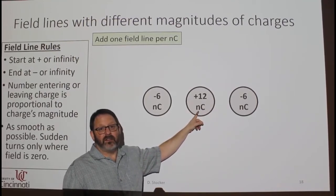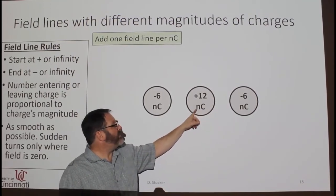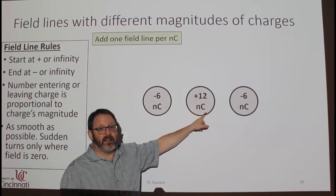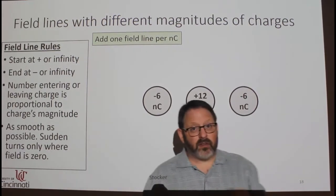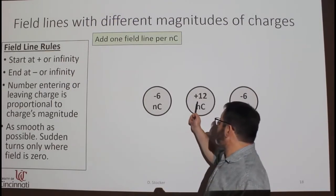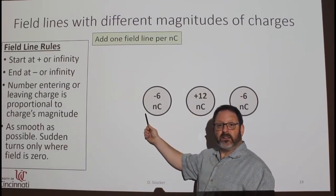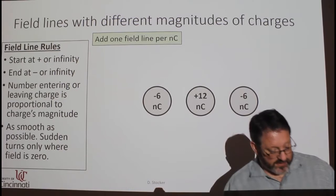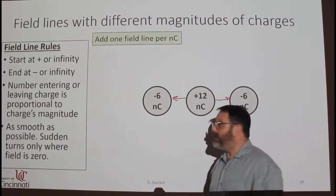Nano, that's 10 to the minus 9. So this is 12 times 10 to the minus 9 coulombs. We know the electric field lines can start at pluses and end at minuses, so it's an easy way to start. Like that.